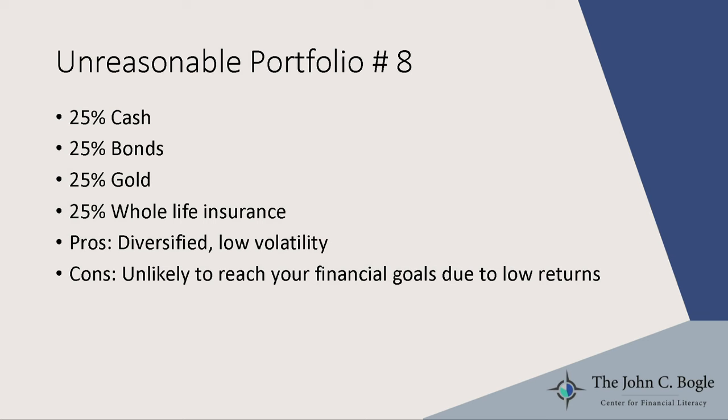How about 25 percent cash, 25 bonds, 25 gold, and 25 whole life insurance? Sure, it's diversified, and it'll have low volatility. But the problem is you'd need to save 50 percent of your gross income for 30 years to accumulate enough. These are all very low-returning asset classes — you're not taking enough risk. Not reasonable.